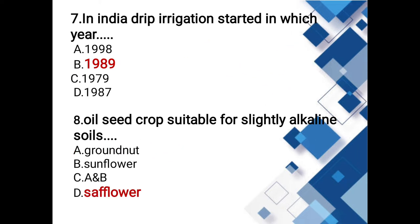In India, drip irrigation started in which year? Options: 1998, 1989, 1979, 1987. The answer is 1989. Drip irrigation was first started in Israel, and India adopted it in 1989.